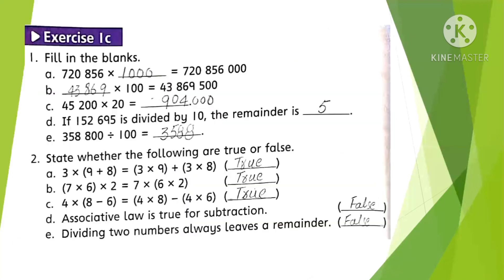Exercise 1C, Question 1: Fill in the blanks. This number multiplied by 1,000 — when we multiply by 1,000 we add three zeros on the right side of the number. Part B: this number multiplied by 100 — put two zeros. Multiplying this number by 100: 904 becomes 90,400. When dividing by 10, the remainder is 5. When dividing by 100, two zeros are cancelled.